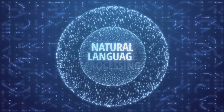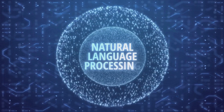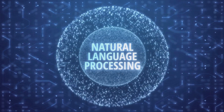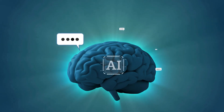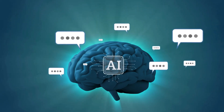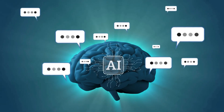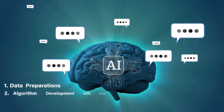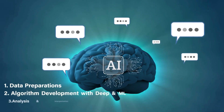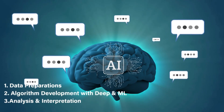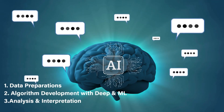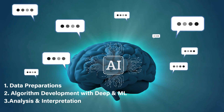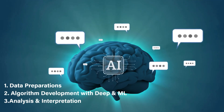Let's see how NLP works. To process human-like language, NLP has three main core elements. One is data processing and preparation. Second, algorithm development with deep and machine learning. Third, analysis and interpretation.